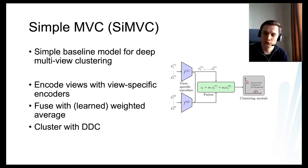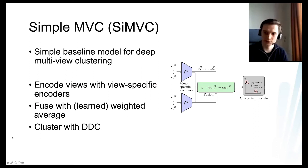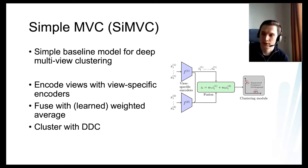With these problems in mind, we asked: what if we just drop the alignment? That is how the Simple Multi-view Clustering model was born. It uses only view-specific encoders, a weighted average fusion where we learn positive weights that sum to one, and the DDC clustering module trained end to end. It turns out to work almost as well as EAMC, and in some cases even better, while being much simpler.